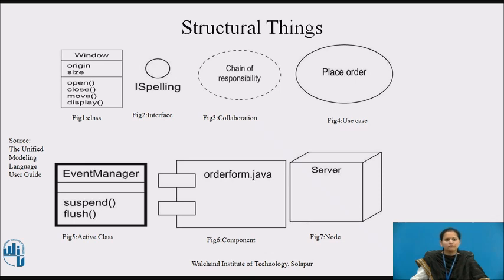Second, an interface is a collection of operations that specify a service of a class or component. It describes the externally visible behavior of that element, which might represent the complete behavior of a class or component, or only a part of that behavior. Graphically, an interface is rendered as a circle together with its name. An interface rarely stands alone — it is typically attached to a class or component that realizes the interface, as shown in figure two.